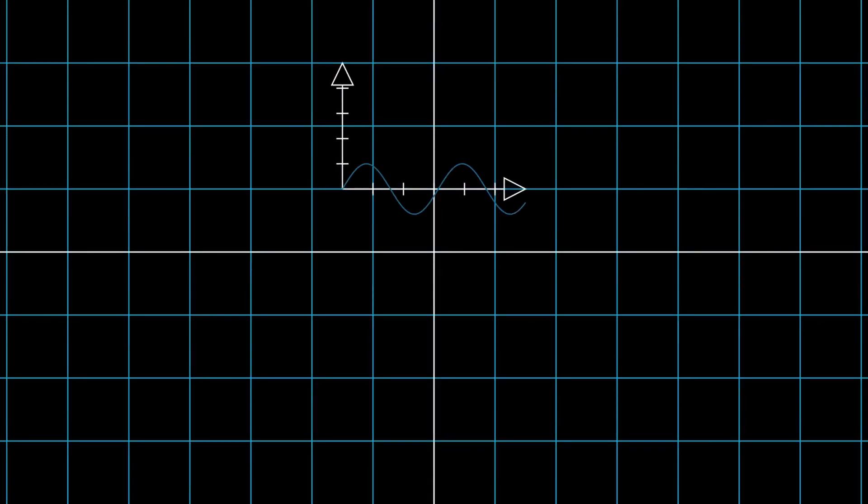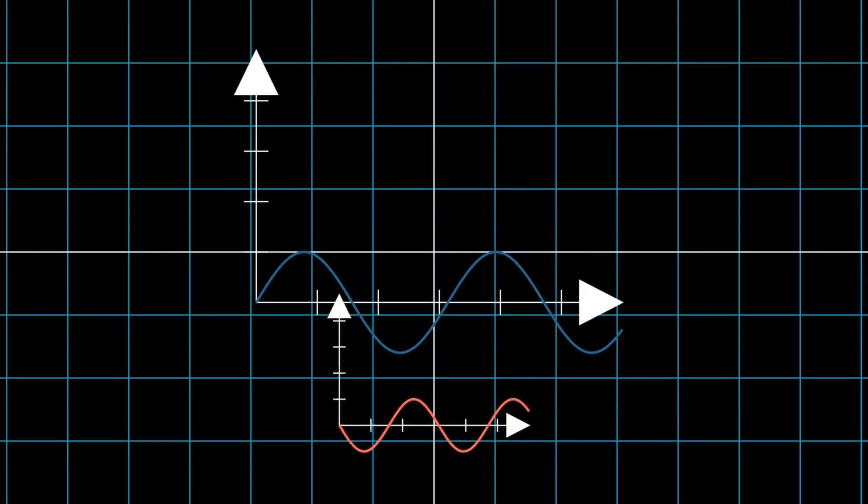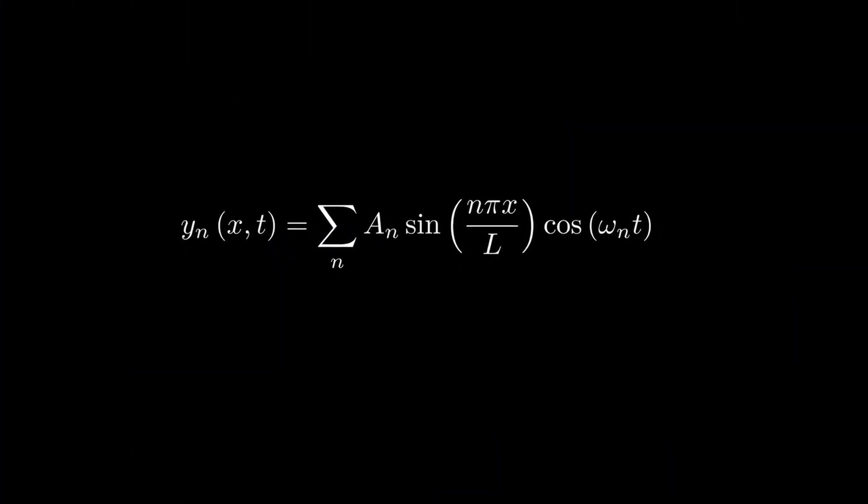As described earlier, a standing wave is a superposition of two traveling waves moving in opposite directions at the same speed and amplitude. So, let's have a look at an example that is both basic and elegant. I can write the nth mode of a standing wave on a string as the linear combination of n normal modes.